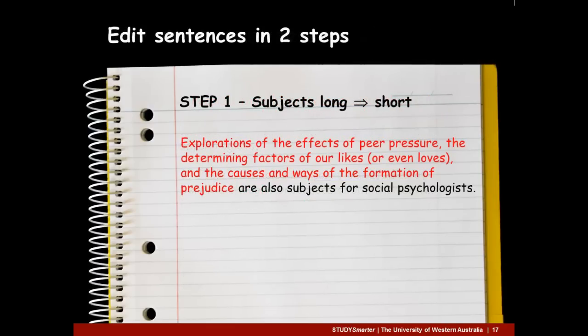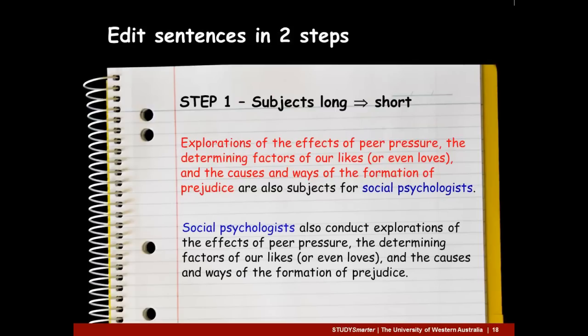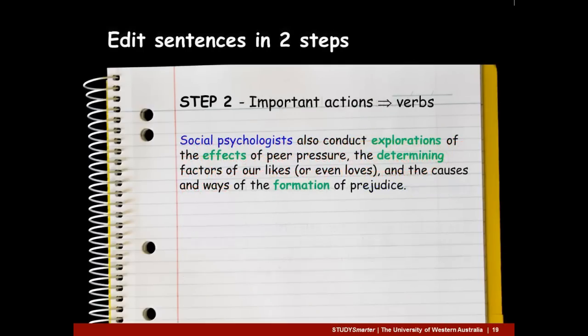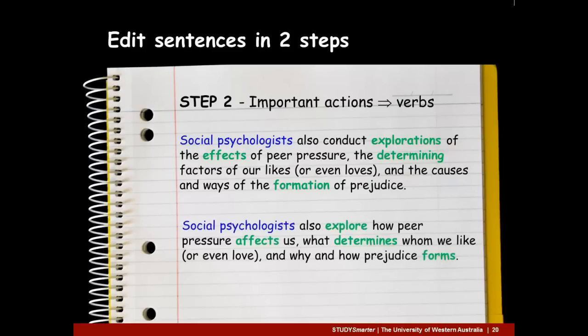When you edit your own writing, follow these two steps. First, check your subjects — if they're long and abstract, find a short specific character to use as a subject, like 'social psychologist'. Secondly, check nouns, adjectives, verbs and subjects. If you find that you've hidden important actions in nouns or adjectives, pull the actions out and reword them as verbs.